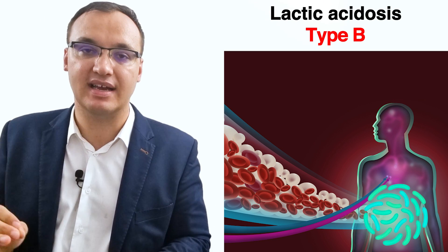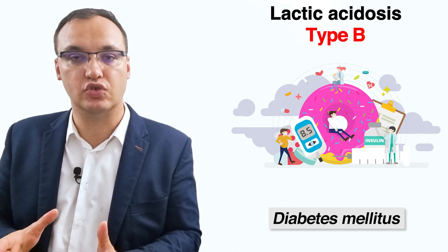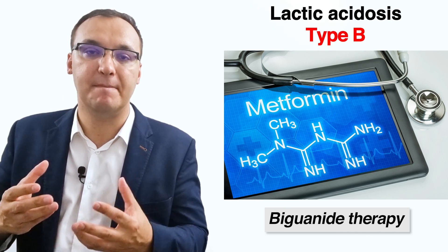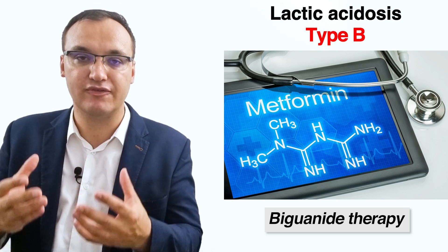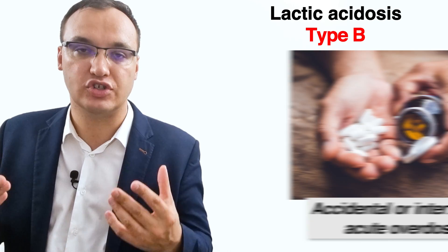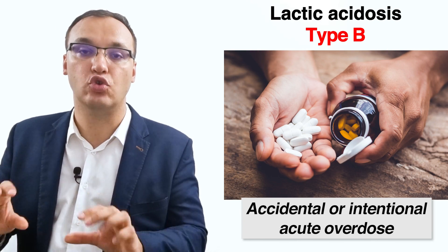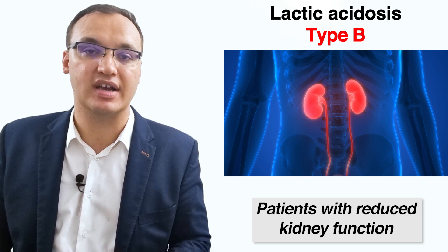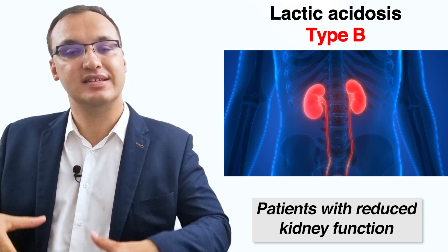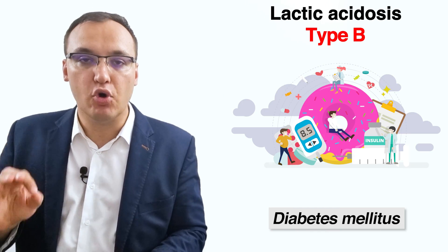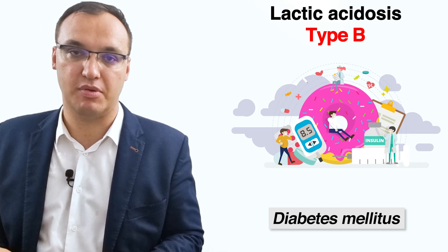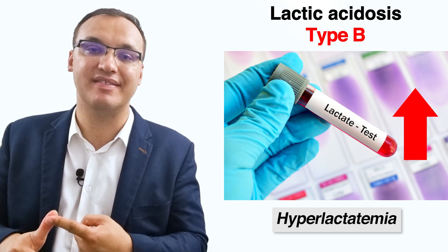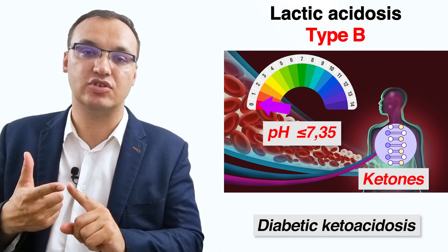One cause of type B lactic acidosis is diabetes mellitus. In type 2 diabetes mellitus, treatment with biguanide therapy — specifically metformin — can cause type B lactic acidosis. Metformin is most likely to generate lactic acidosis when high levels result from an accidental or intentional acute overdose. Also, metformin therapy in patients with reduced kidney function can cause toxic levels, since these drugs are almost entirely removed by the kidneys, resulting in lactic acid accumulation. Moderate degrees of lactic acidosis unrelated to metformin can also occur in some diabetic patients, including those with hyperlactatemia or diabetic ketoacidosis.